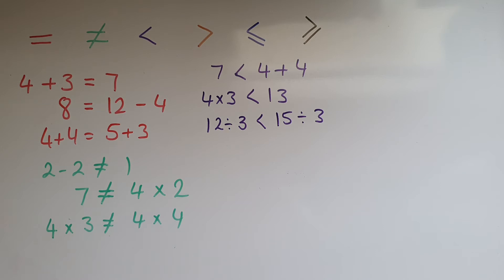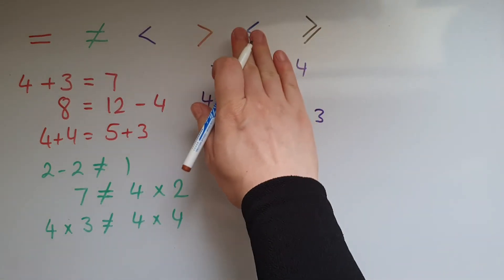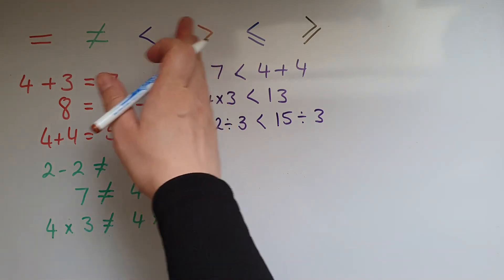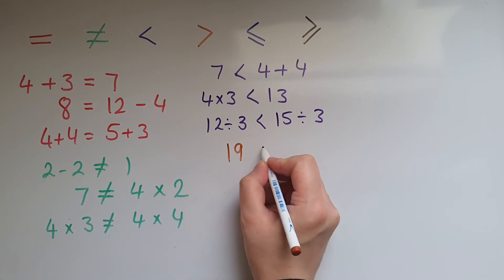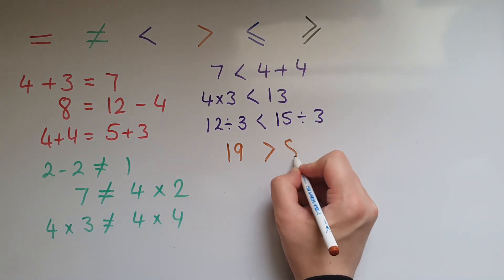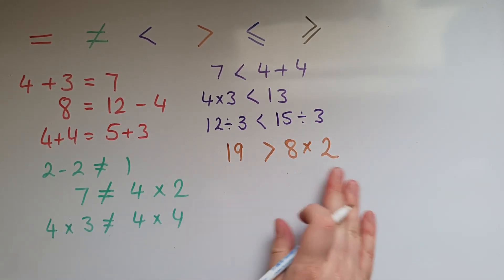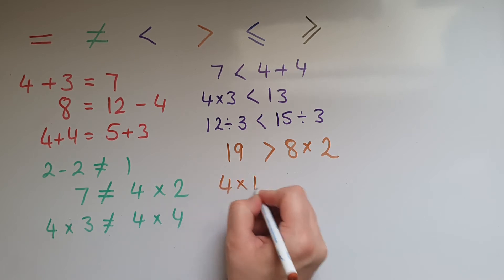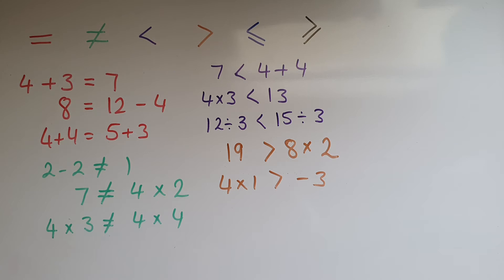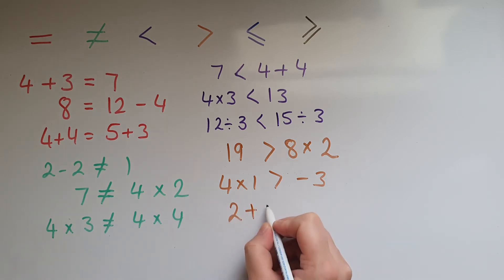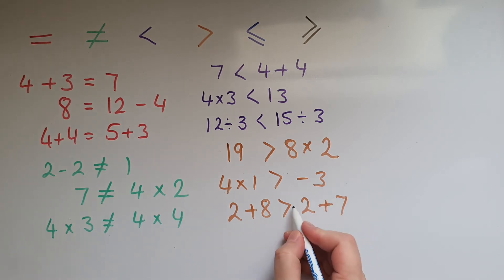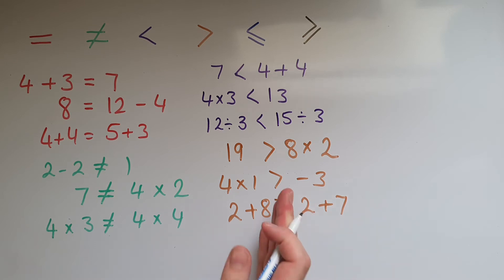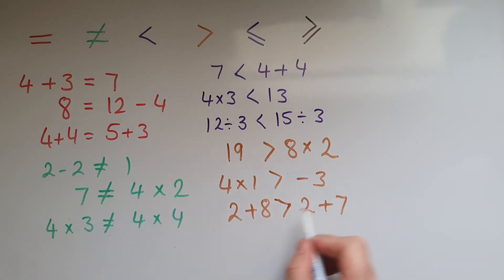Greater than is completely the opposite of less than, which means what you have on the left is greater than what you have on the right. For example: 19 is greater than 8 times 2 (so 19 is greater than 16); 4 times 1 is greater than negative 3; and 2 add 8 is greater than 2 add 7. The symbol starts with a dot but expands in this direction, showing that this side is greater.